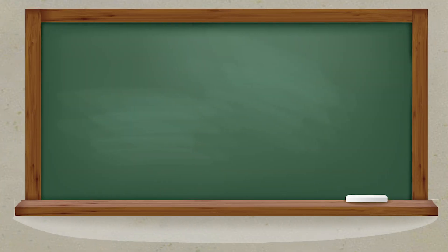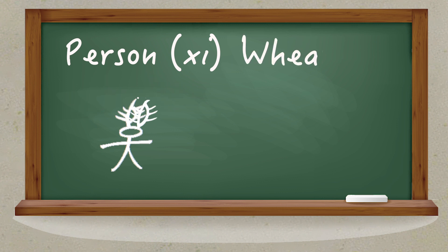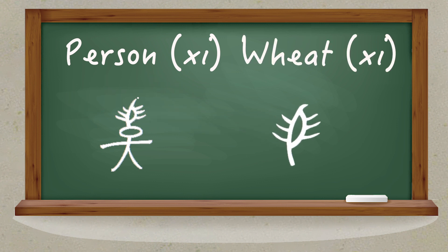As an example, let's look at a different phonosemantic compound in Naxi: 'xi,' meaning 'person' — that is, the 'xi' in Naxi. It's a person with a piece of wheat growing from their head. This does not indicate someone who is growing crops on their scalp, but rather the wheat, which is pronounced 'xi,' simply tells us how to pronounce the word for 'person.'